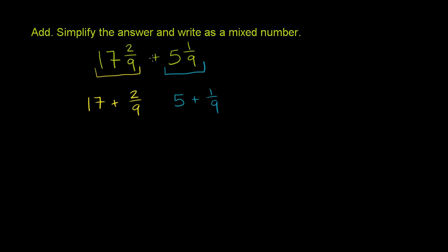So 17 and 2/9ths plus 5 and 1/9th is the same thing as 17 plus 2/9ths plus 5 plus 1/9th. These two statements are completely equivalent.